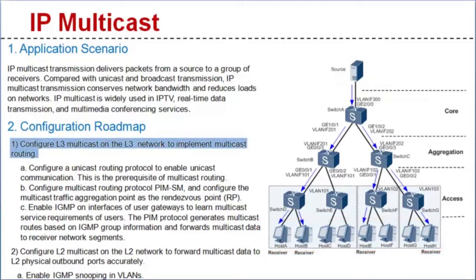First, configure multicast on the Layer 3 network to implement multicast routing. Layer 3 multicast configurations can be completed in three steps. Step 1: configure a unicast routing protocol to enable unicast communication. This is the prerequisite of multicast routing, because multicast routing protocols cannot calculate forwarding paths and rely on the optimal forwarding path selected by a unicast routing protocol to create and maintain multicast routes.